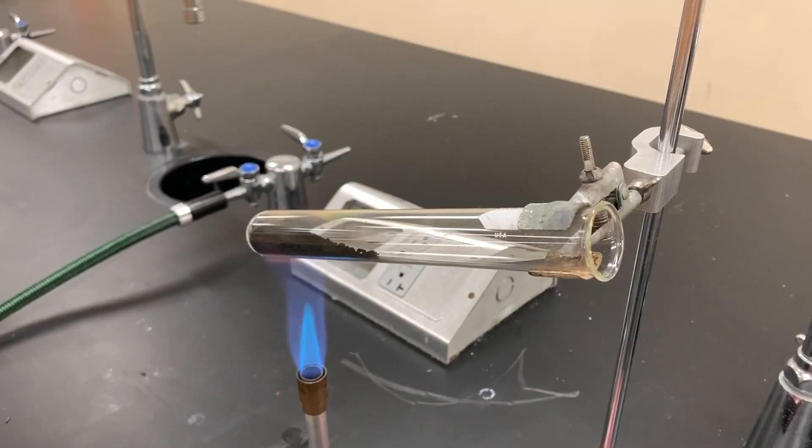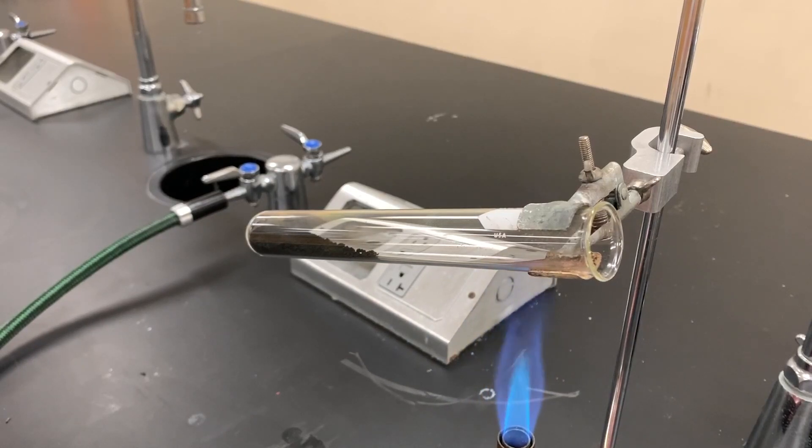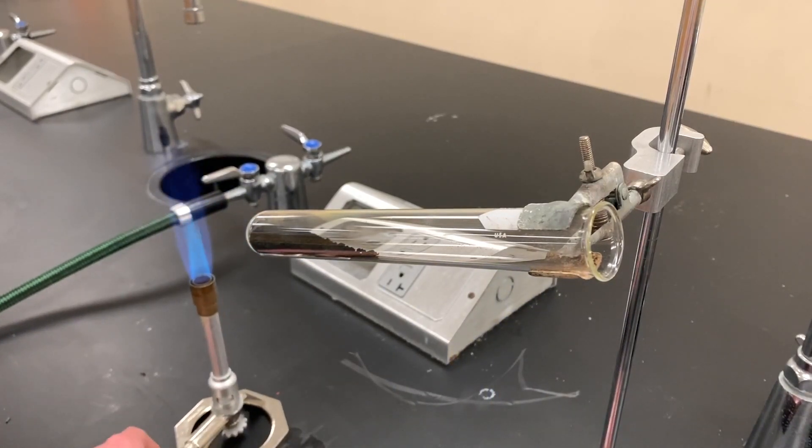I've used my Bunsen burner to drive off all the water that was in the upper portion of the test tube, so that looks like it's gone. The last thing I have to do is safely turn off my Bunsen burner and clean up.